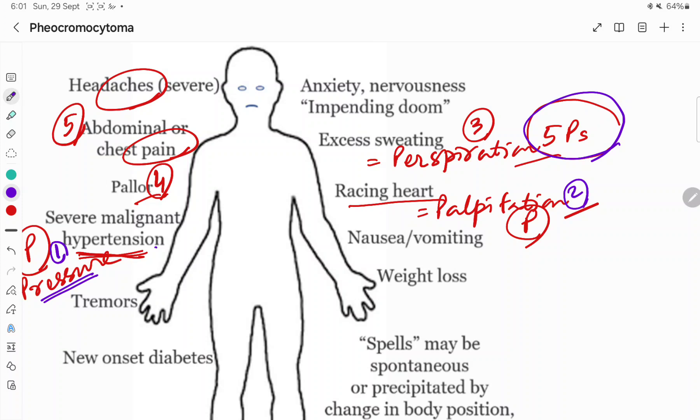Excess sweating will be there. Four for pallor. And five for abdominal or chest pain. So five P's are the common symptoms of pheochromocytoma.